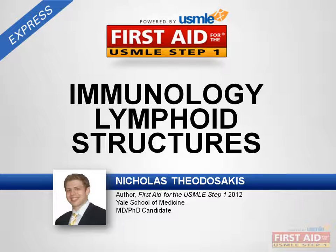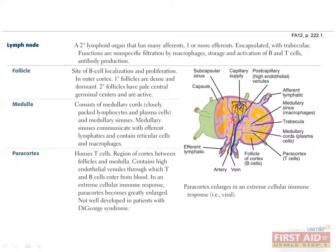Let's begin by discussing the anatomy of the immune system. The lymph node is a secondary lymphoid organ and an integral component of innate, nonspecific immunity. It has many afferent and at least one efferent lymphatic. Afferent channels bring material in, while efferents take a pathway away from the site. The lymph node is an encapsulated organ that functions to facilitate macrophage filtration, storage, and activation of B and T cells, as well as antibody production.